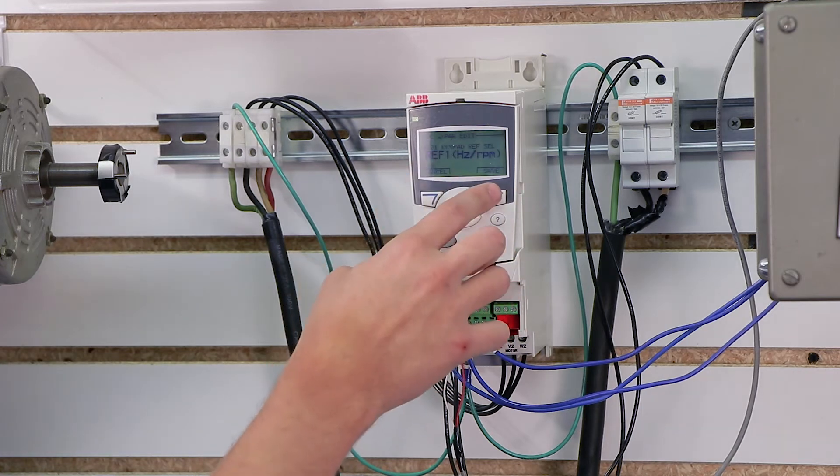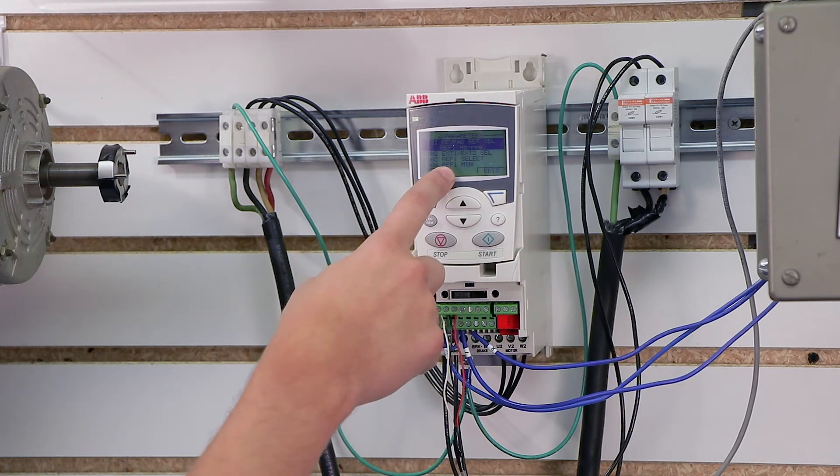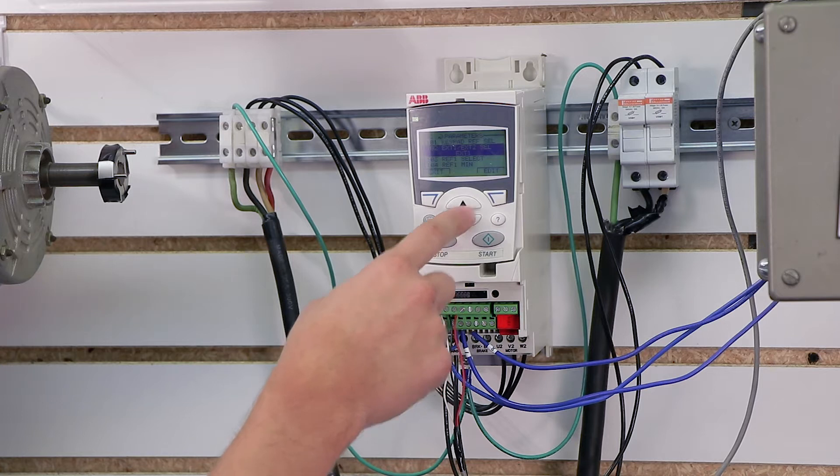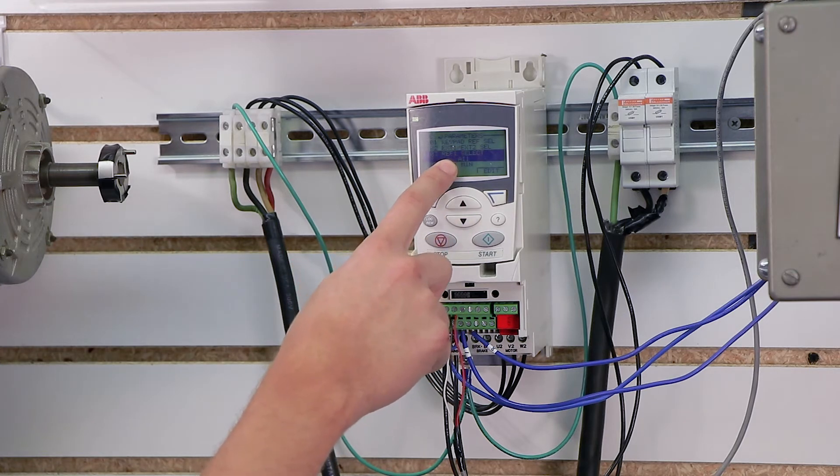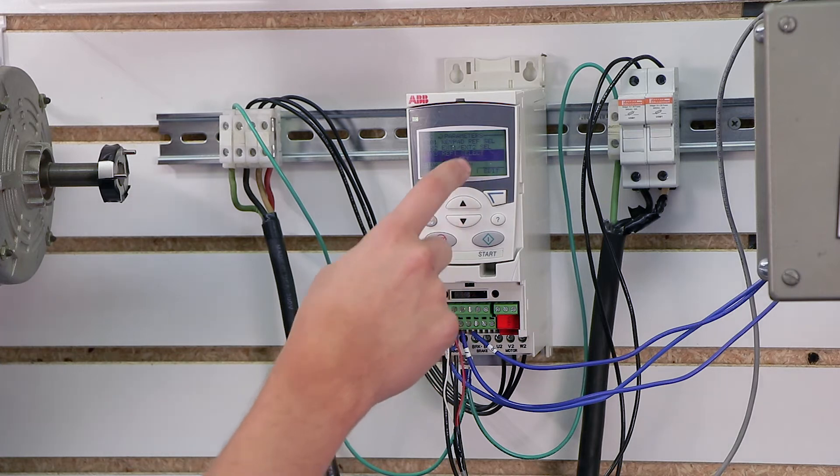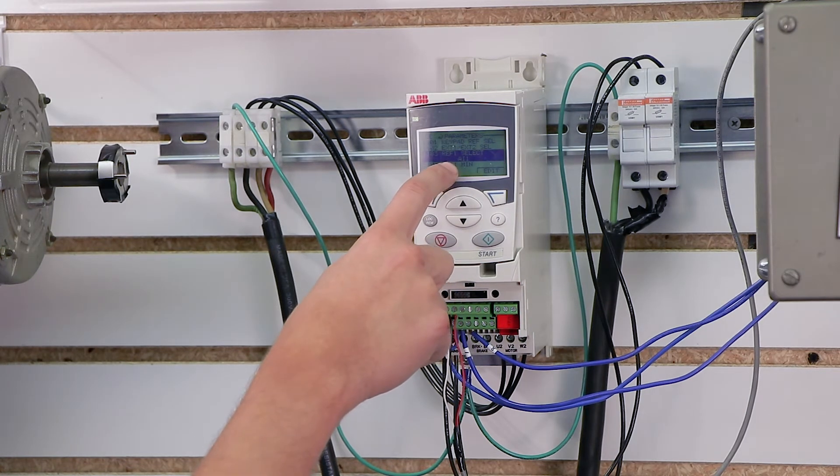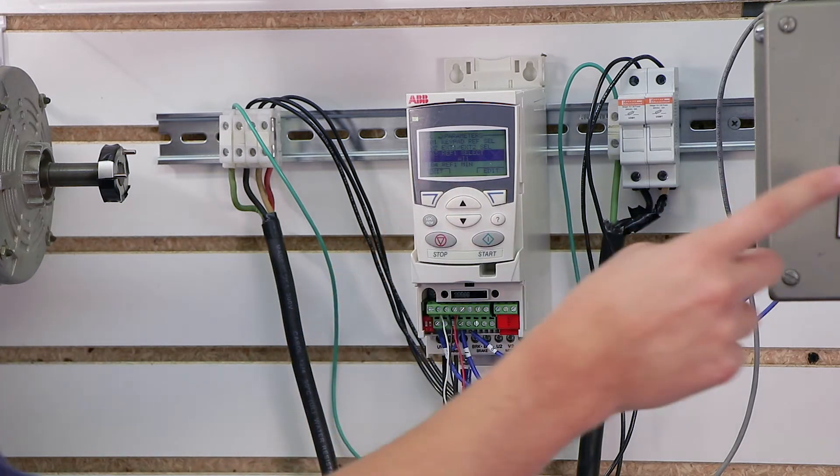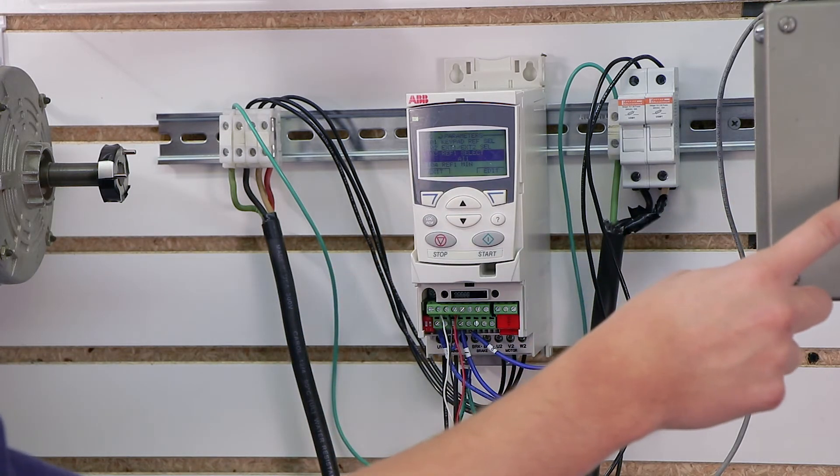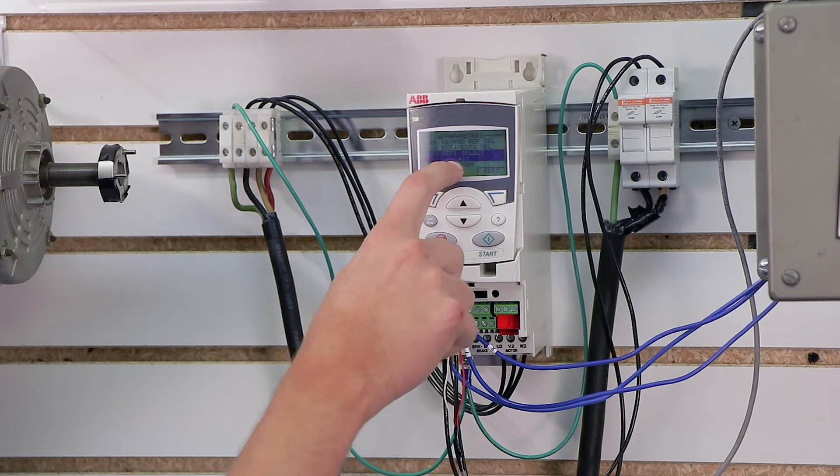So reference 1 tells the drive to look at my reference 1. I'm going to go straight into this reference 1 select. This is parameter 1103, reference 1 select. The macro I chose set this to analog input 1. So 1101 says okay look at reference 1, 1103 says reference 1 is analog input 1. So it's looking at my speed pot. Now naturally I wired a speed pot for analog input 1. You could just as easily wire an external 0 to 10 volt signal of any kind to analog input 1.